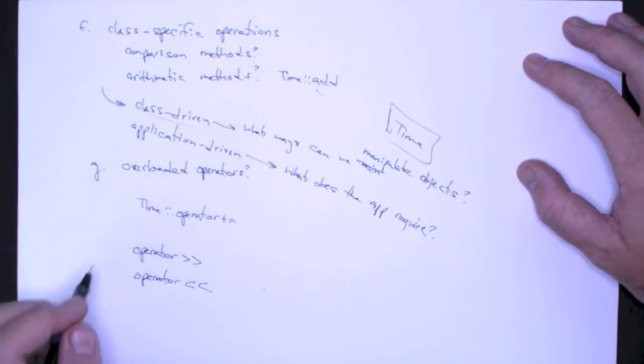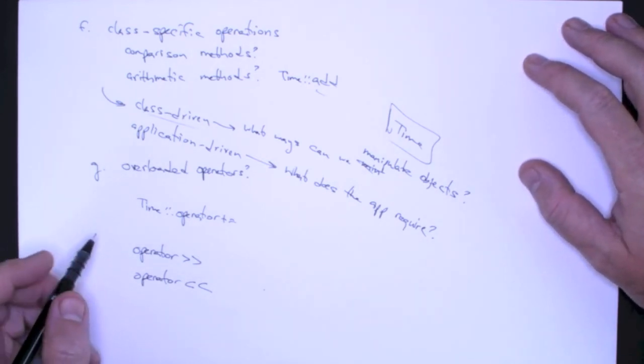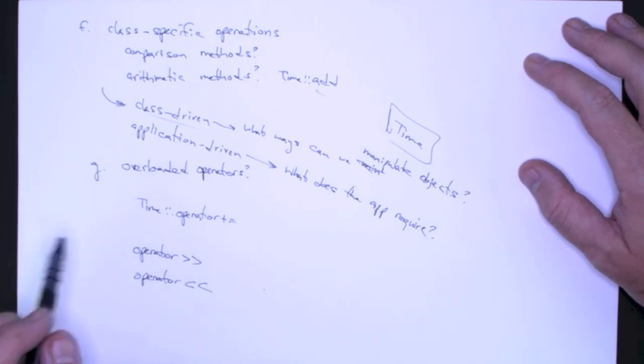So what overloaded operators are you going to have? So that's a simple algorithm that, at least for the first semester class, you should be able to follow in defining objects for, or classes for storing information about single objects.